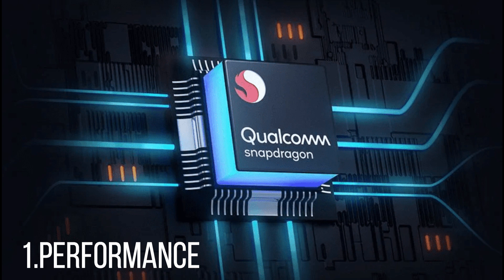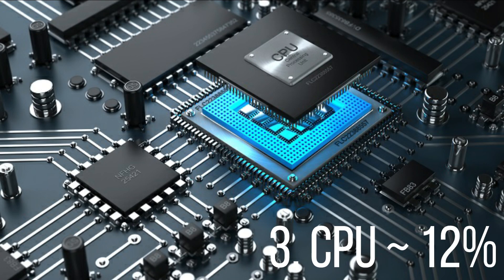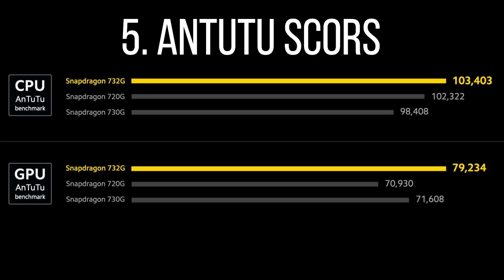Overall, the Snapdragon 732G performs better than the Helio G95, showing advantages in energy efficiency, CPU performance (approximately 12% better), GPU performance for gaming (approximately 6% better), and AnTuTu scores. Thanks for watching my channel, please support me.